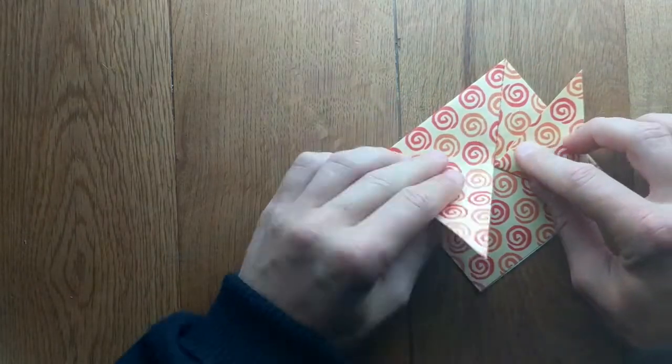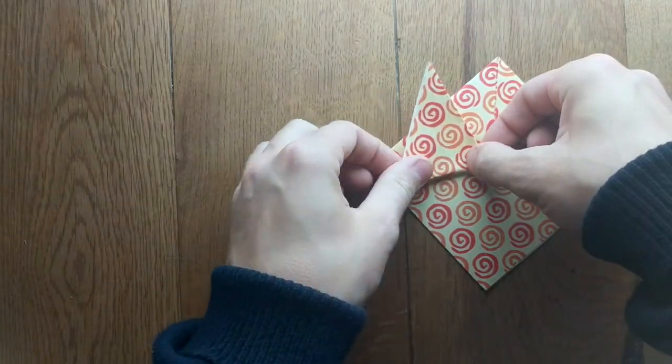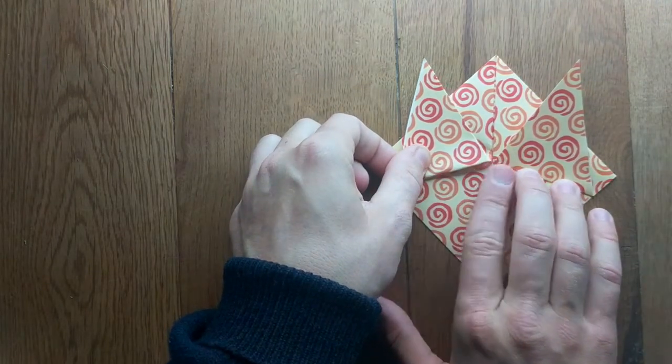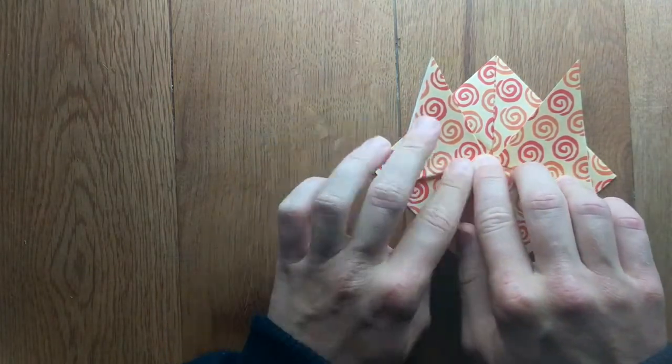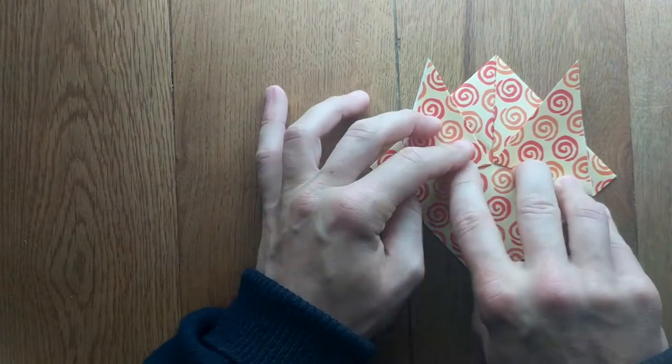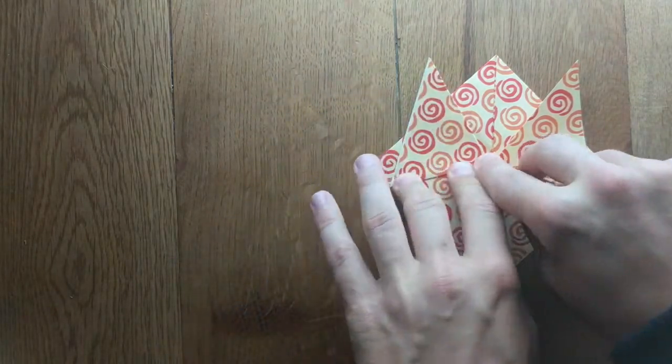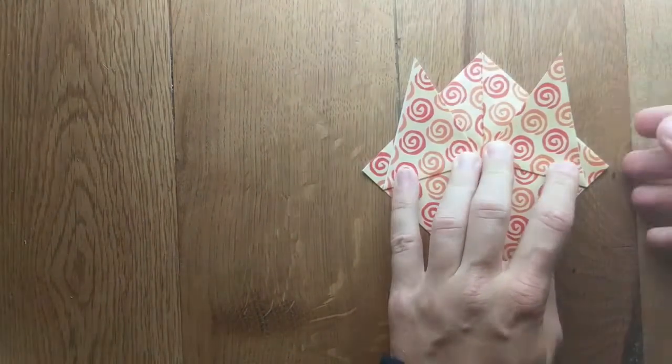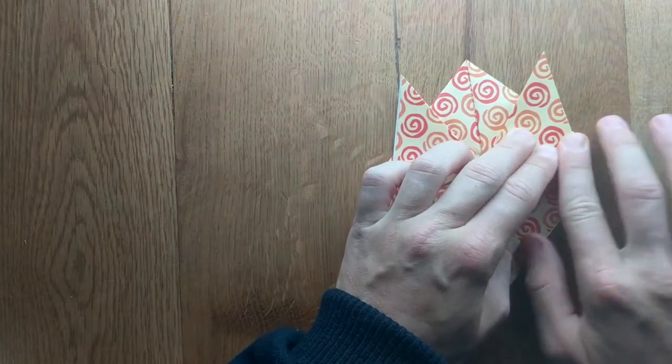You want to do the same. The only thing is you want to do this exactly the same distance on the other side, so just make sure it's the same level on both sides. And then these little flaps here, you're going to take them in, just fold those in.